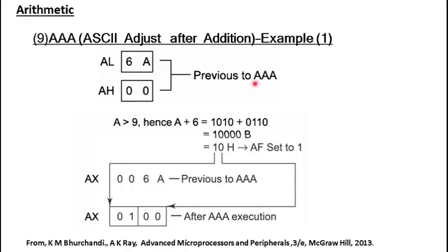Let's see an example. Suppose we have a packed BCD representation in AL and we issue AAA. AAA's logic checks the lowest nibble, identifies that it contains 10, which is not valid BCD. So 6 is added to it, giving 16. The 0 is kept in AL — the entire byte will hold 0 — and the carry of 1 is passed to the next higher byte, AH. So the single value 10, which occupied one nibble before adjustment, now takes two bytes: zero in one byte and one in the other.